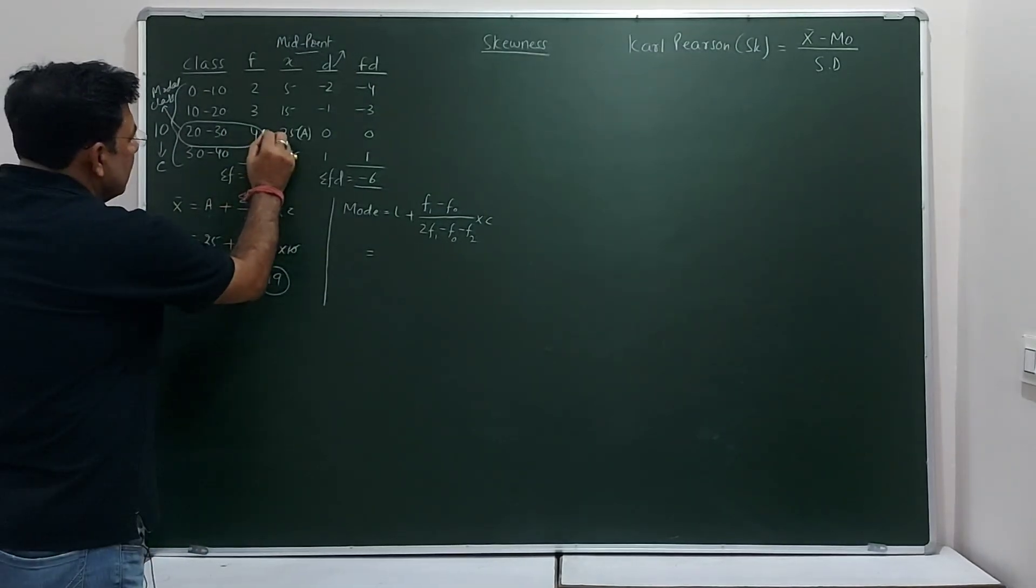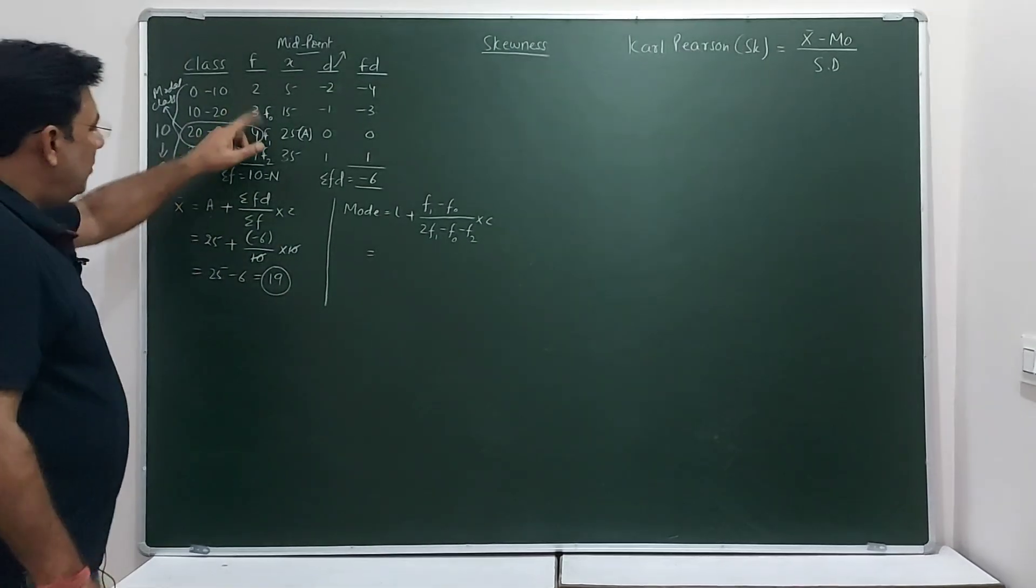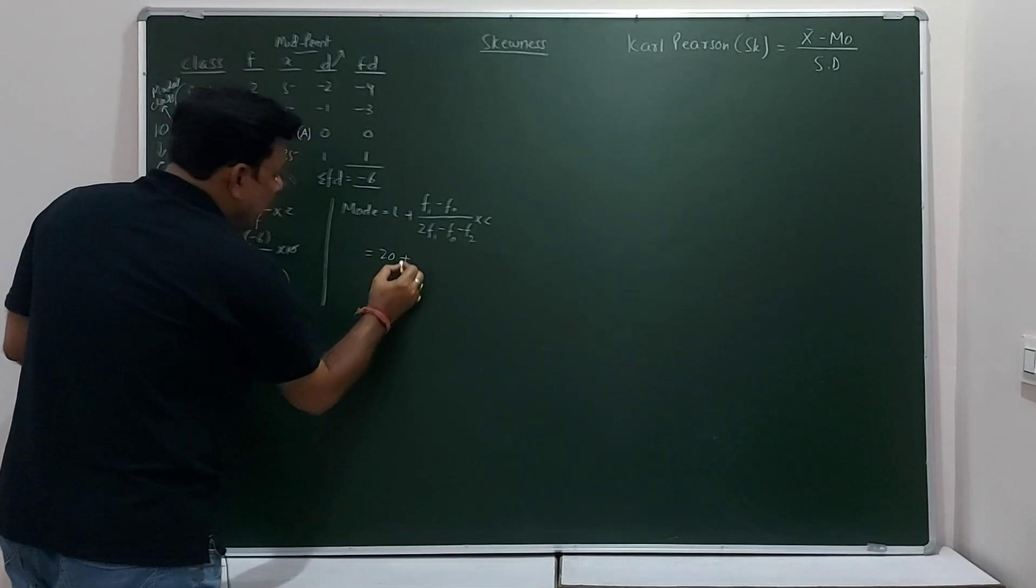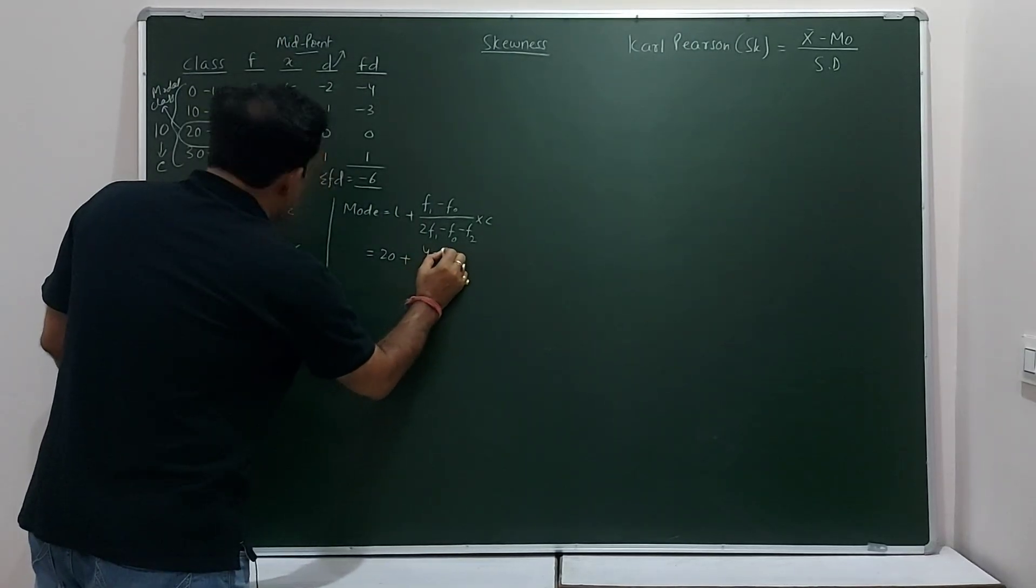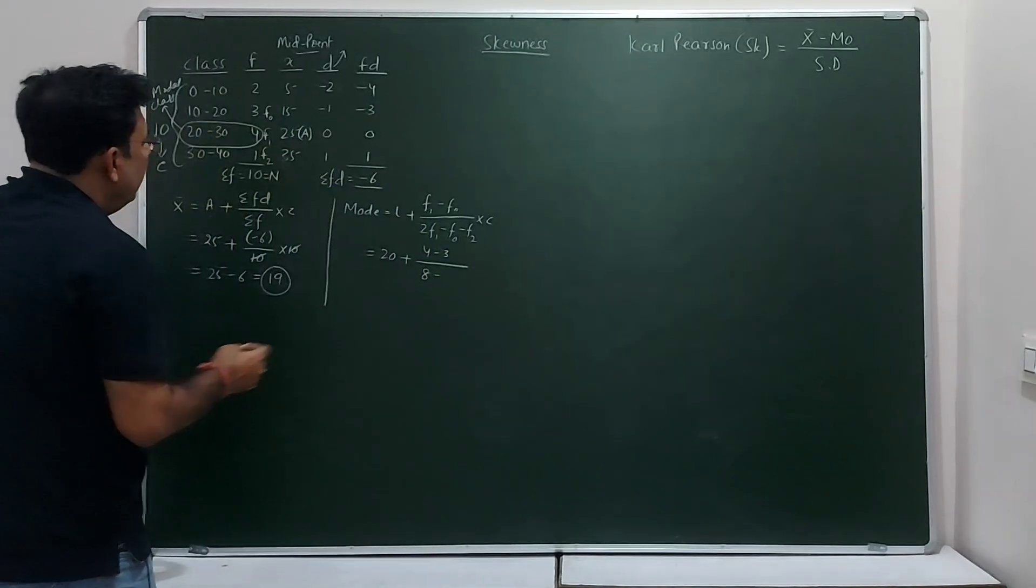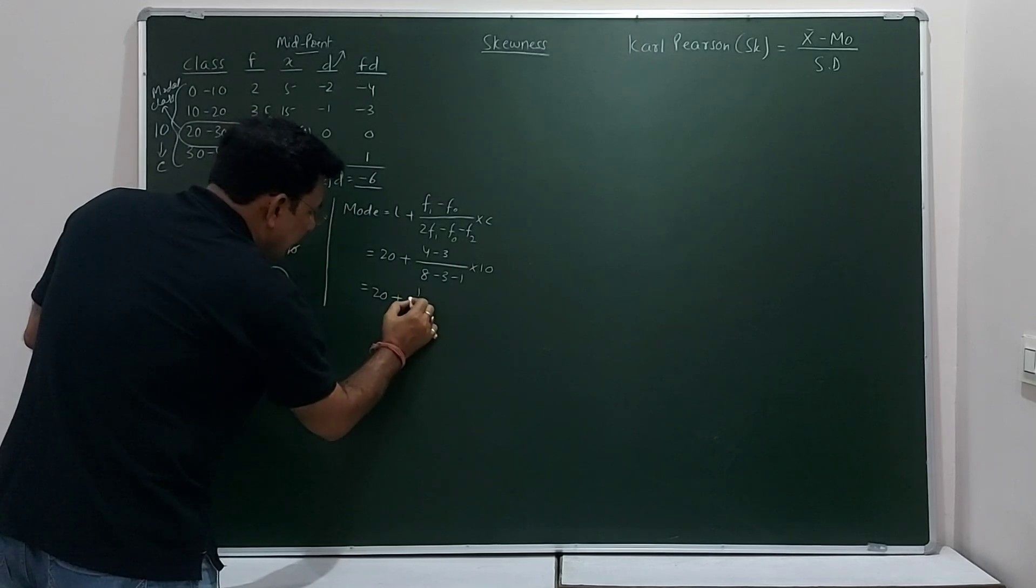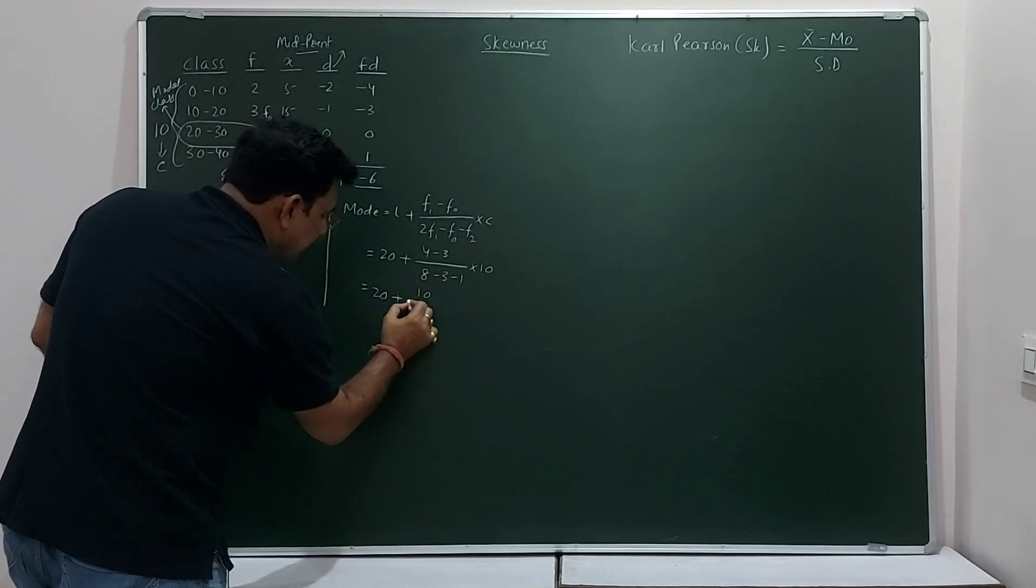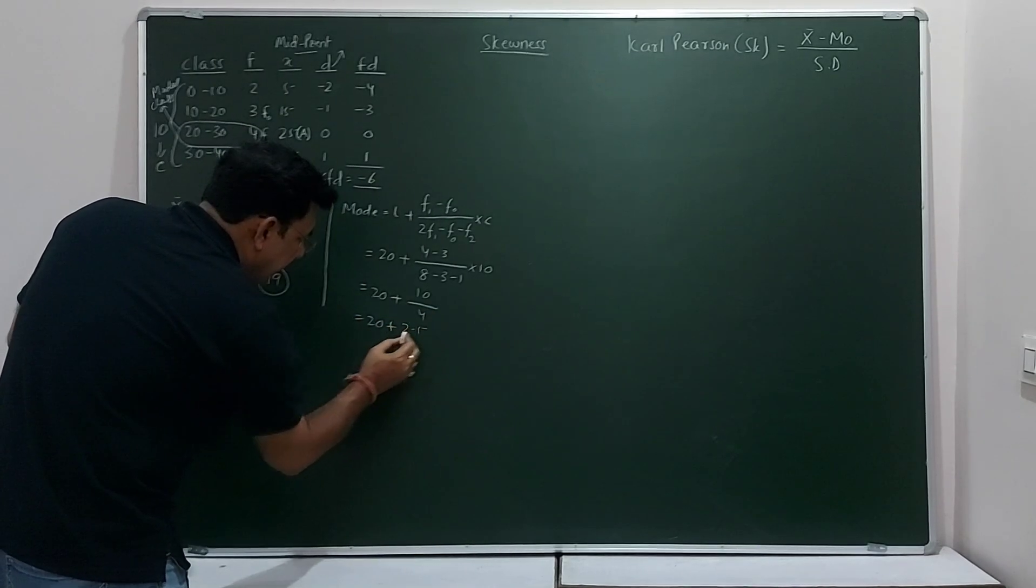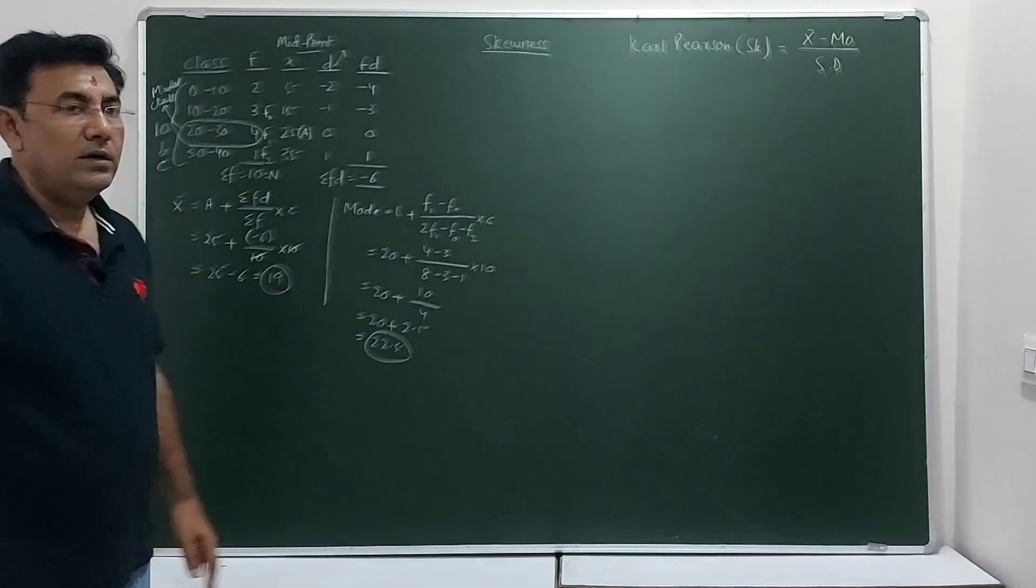Now, here, this 4 is called F1. The preceding number is F0 and the succeeding number is F2. Now, put all these values here. L is the lower limit of the class. So, that is 20 plus F1, so F1 is 4 minus 3 divided by 2F1, 2F1 here is 8 minus, again, F0 3 minus 1 into class size is 10. So, you have to calculate here 1 into 10, so you get 10 here. And 8 minus 3, 5 minus 4. Is that clear? So, 20 plus 2.5. So, the mode will be 22.5. So this is the value of mode of this particular frequency.